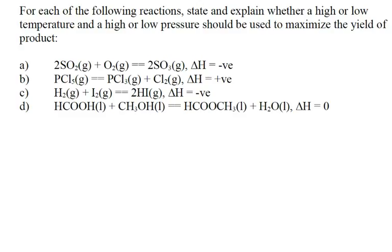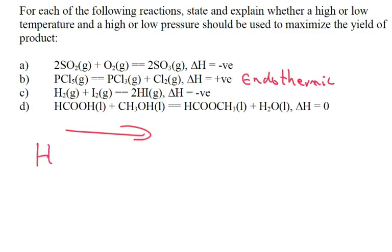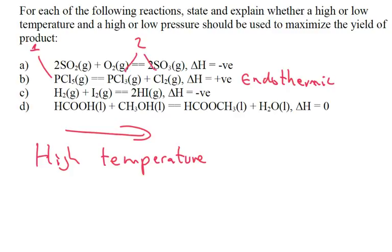Part B: PCl₅ ⇌ PCl₃ + Cl₂, where ΔH is positive — so it's endothermic. Because it's endothermic and we want more product, we want a high temperature to shift the equilibrium position to the right. For pressure: there is one molecule on the left and two on the right, so a low pressure would shift the equilibrium position towards the right and is better.